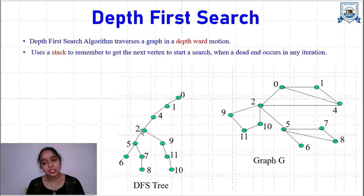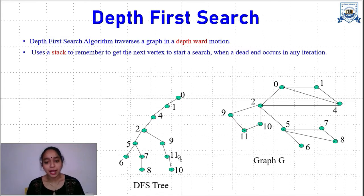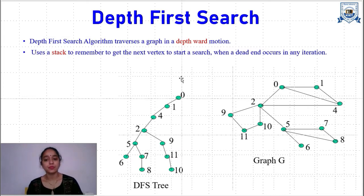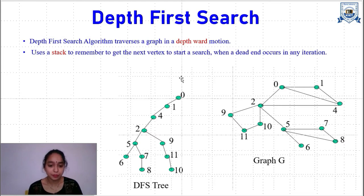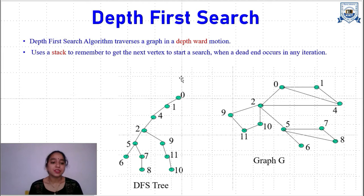From 2, the adjacent not yet visited is 9. Adjacent of 9 is 11, adjacent of 11 is 10. Adjacent of 10 which is not visited — there is none. So we backtrack to 11, backtrack to 9, backtrack to 2, backtrack to 4, backtrack to 0, backtrack to 1, backtrack to 0. In Depth First Search, from a starting vertex we go into the depth of that vertex, then into the depth of others — going in a depth-first motion. This is known as depth first traversal.